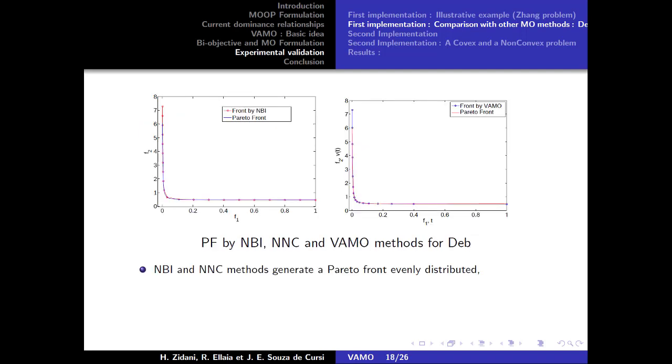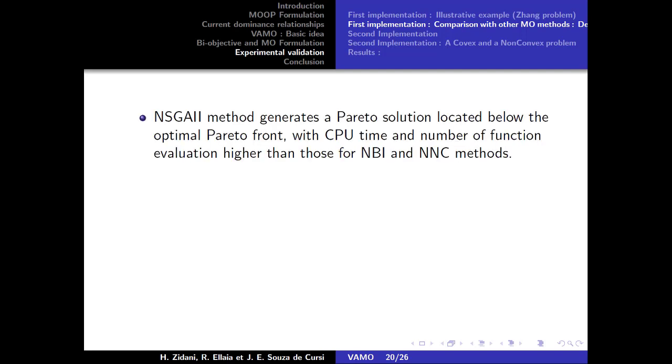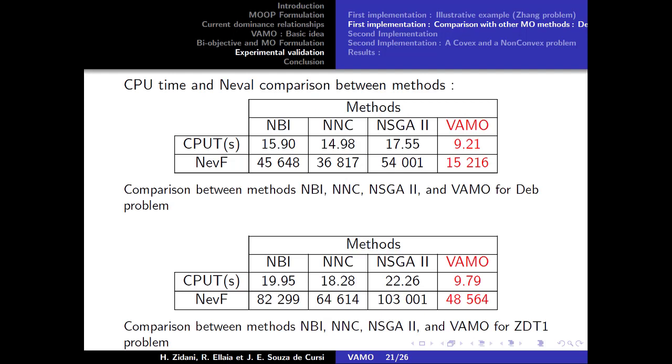However, the Pareto points are not uniformly distributed. The results also show that the NBI and NNSC methods generate a Pareto front evenly distributed. The NBI method is slow and costly in terms of the function evaluation than the NNSC method. This is due to the equality constraints that consume a lot of CPU time.